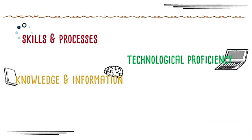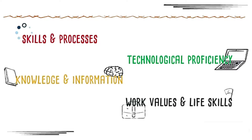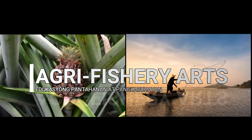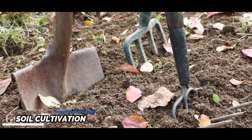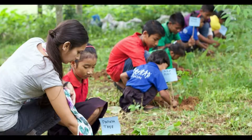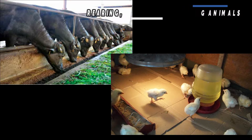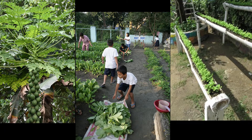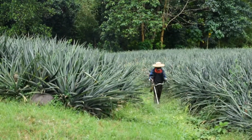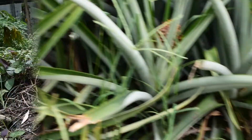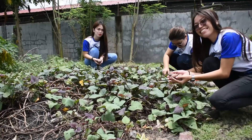Now we will discuss the agri-fishery arts. Examples of agriculture include cultivating soil, planting, raising and harvesting crops, and rearing, feeding, and managing animals. Agri-fishery arts is one of the components of EPP and is designed for hands-on learning and application of skills in agriculture and aquaculture, providing adequate and actual learning experiences.